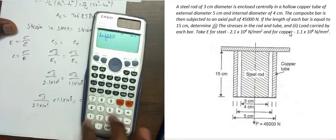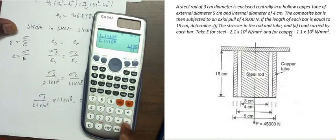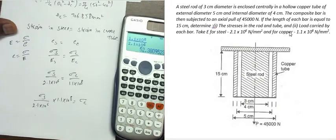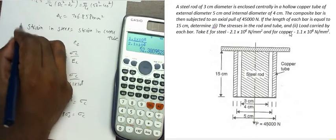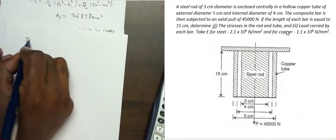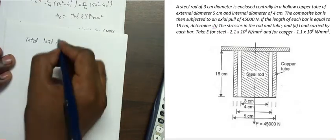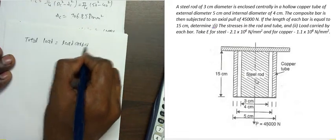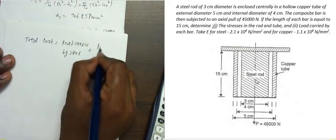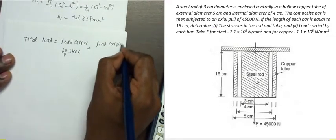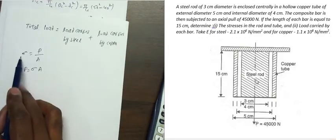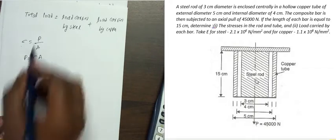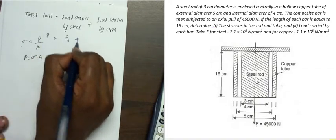1.1×10⁸ divided by 2.1×10⁶ gives us approximately 52.38. So σC = 52.38 × σS. Now applying the second condition: total load P equals load carried by steel PS plus load carried by copper PC. We know that load equals stress into area, so P = σS × AS + σC × AC. Total load is 45,000 N.